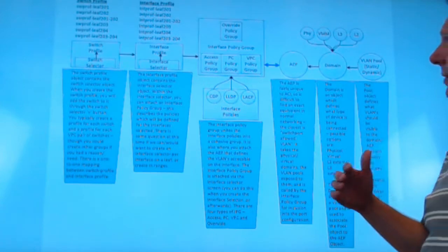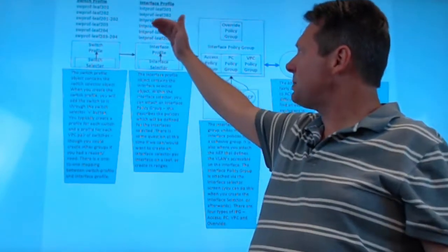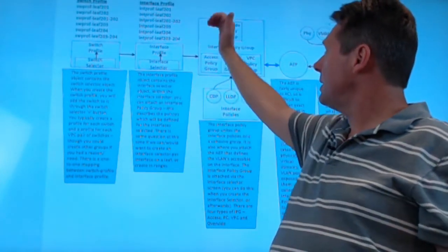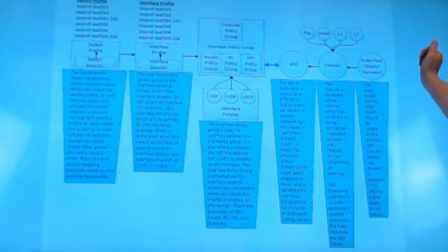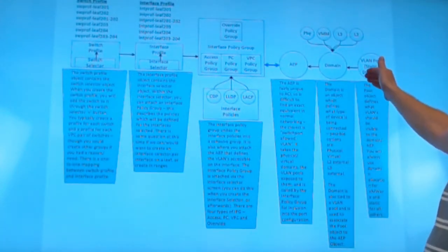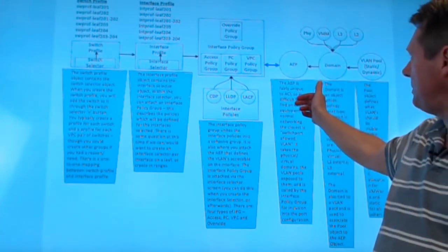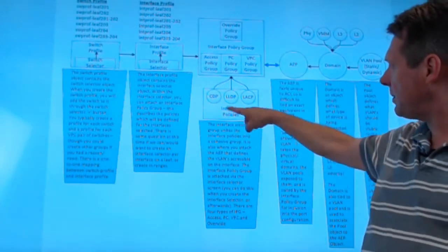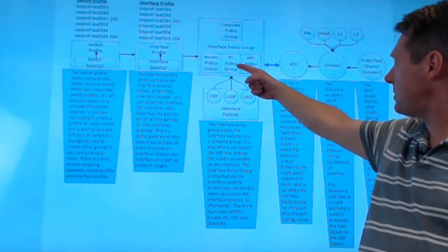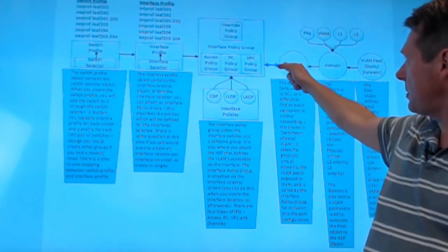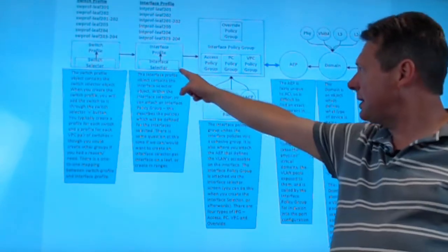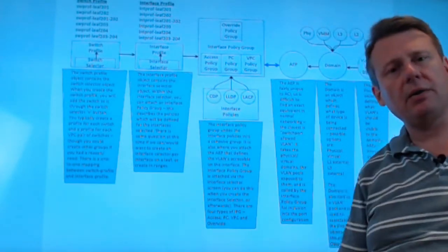Again, high level of the flow for me is switch profile to switch selector, interface profile to interface selector, VLAN pool, domain, usually physical, AEP, interface policies, meaning the policy group. The policy group also calls the AEP. Then the interface selector calls the policy group.